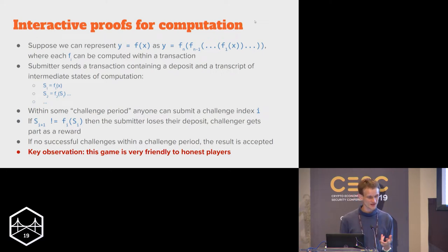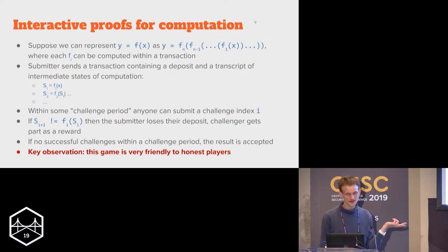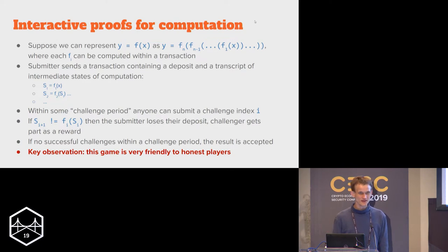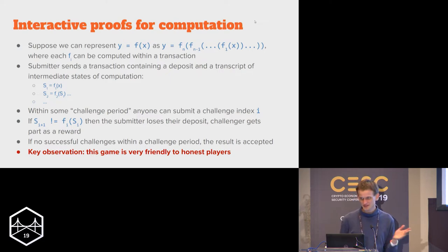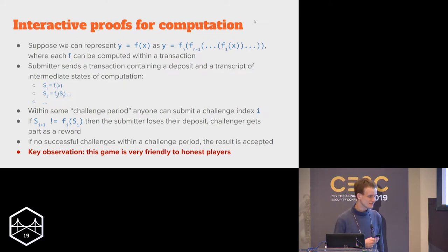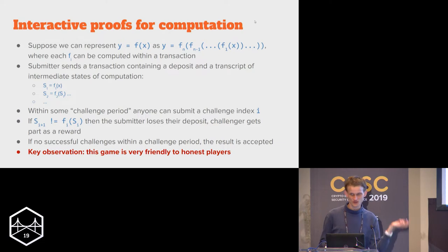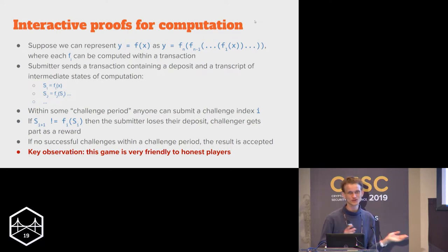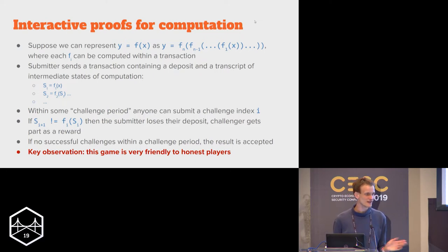A key observation is that this game is very friendly to honest players. The reward you can get is fairly small, but the penalty for submitting something wrong is very large. If you challenge, you have basically a 100% chance of getting your reward, pretty much immediately. So it's very friendly to the challenger, very unfriendly to bad submitters. As long as you have at least some people willing to run the computation altruistically, it's pretty much guaranteed that if a computation is incorrect, it's going to get caught.